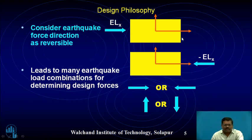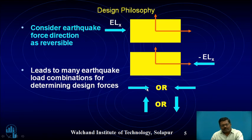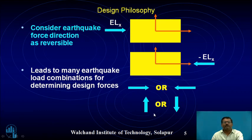ELX shall be applied towards the right, and then ELX shall be applied towards the left — same magnitude but opposite direction. This leads to many earthquake load combinations for determining design forces. For lateral forces, the same force is applied in both directions. When the vertical component of earthquake load is also considered, both upward and downward earthquake forces must be considered, giving additional load combinations in vertical loading.